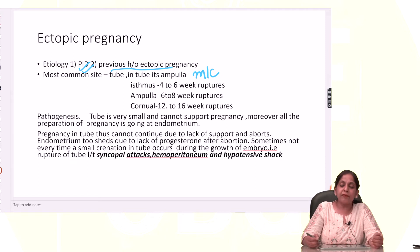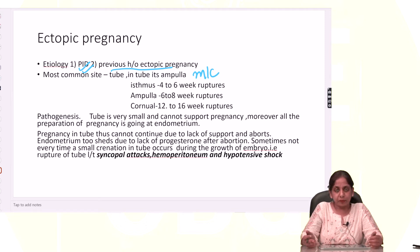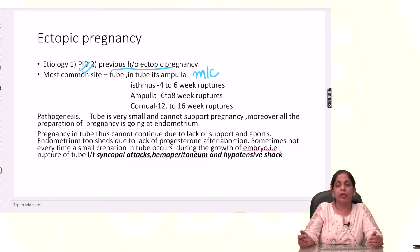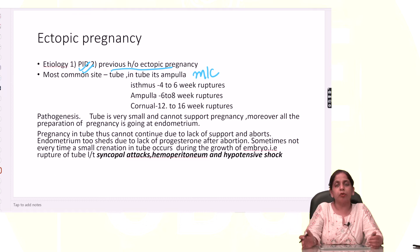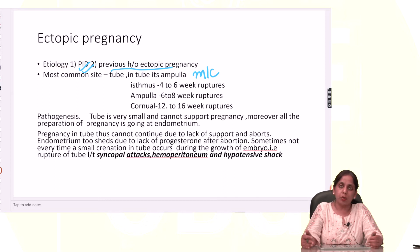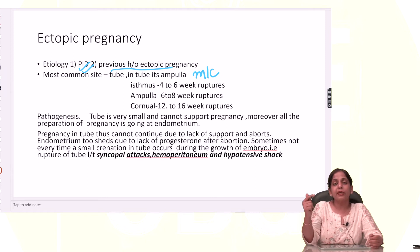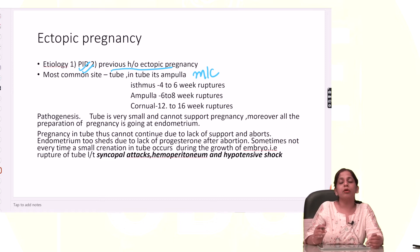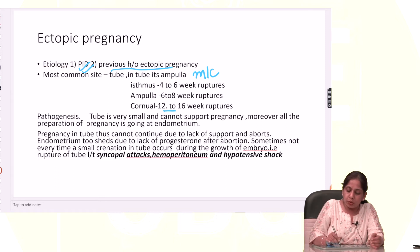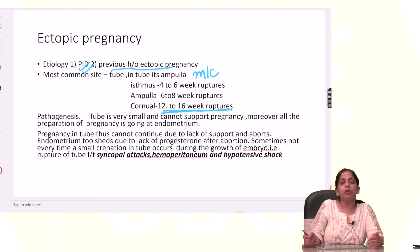Now we have different parts of the tube. The part which is in the uterus is known as interstitial or cornual. This part is the most narrow part, but its pregnancy is quite long — going up to 12 to 16 weeks — because it is supported by myometrium and gets nutrition from myometrium.